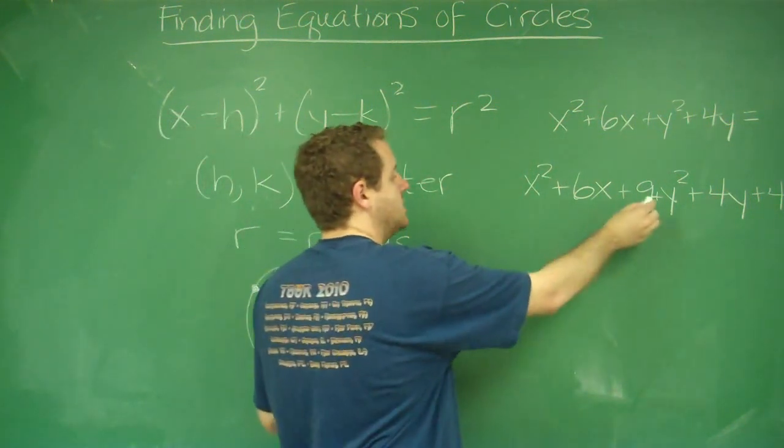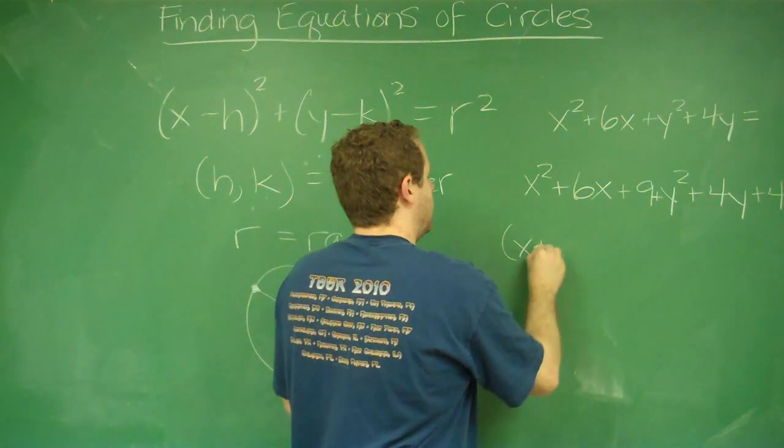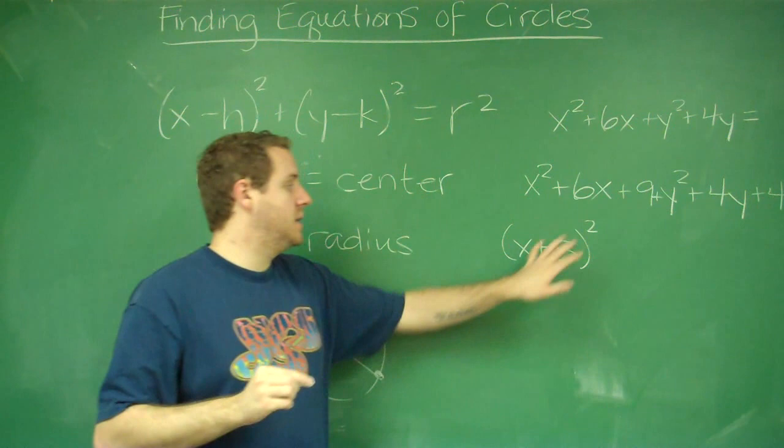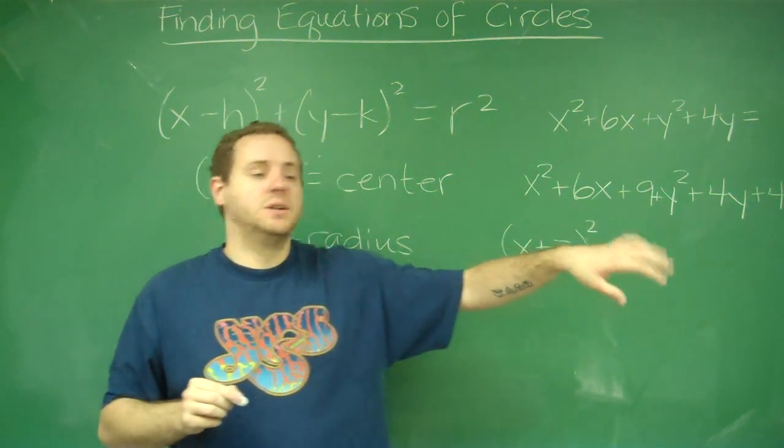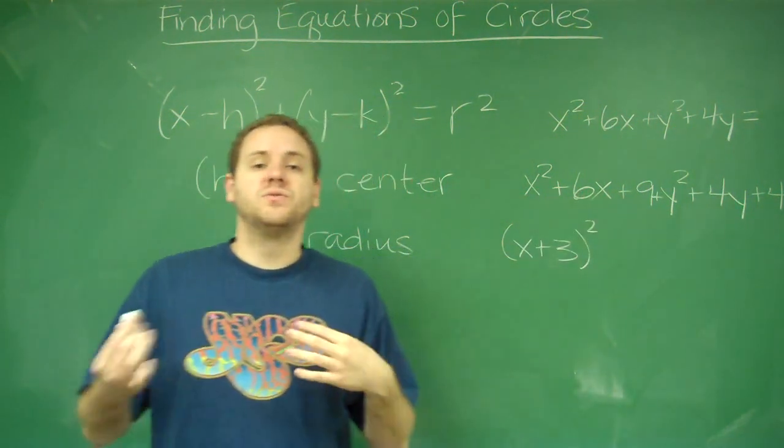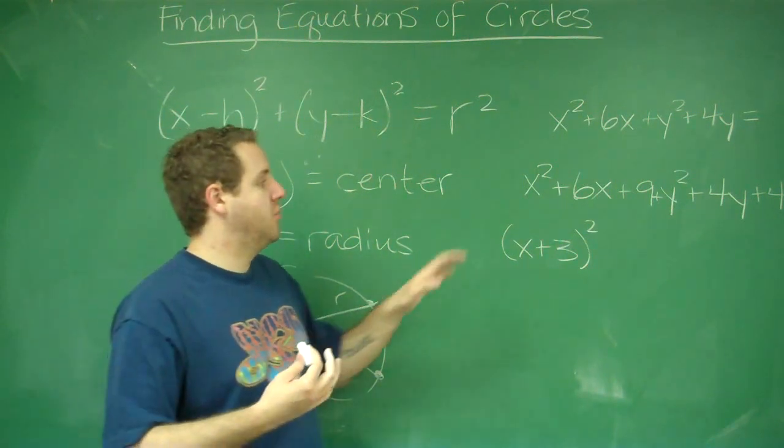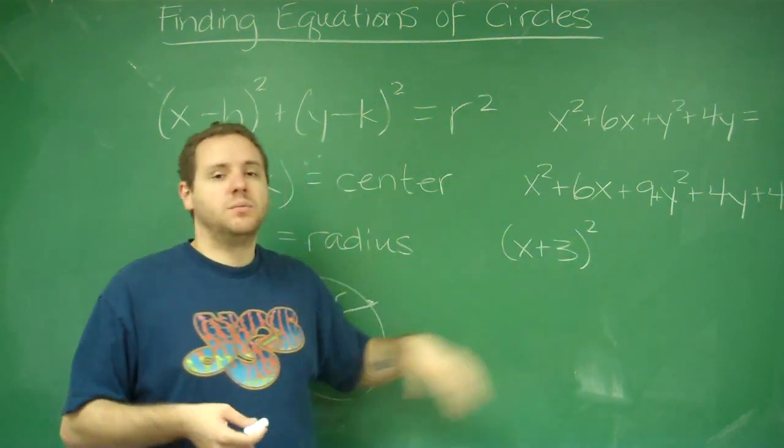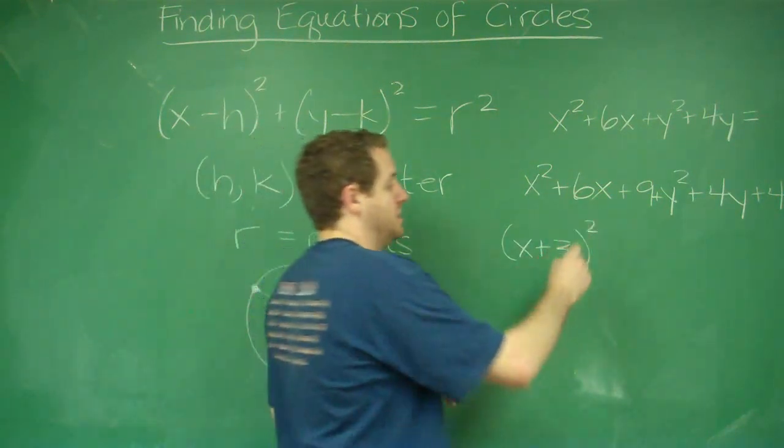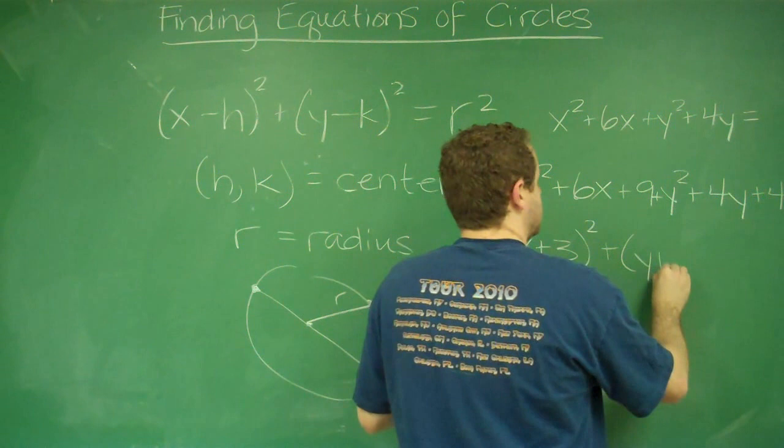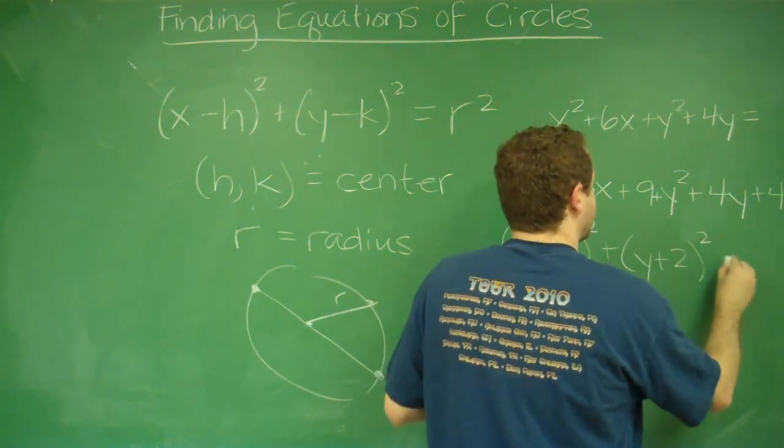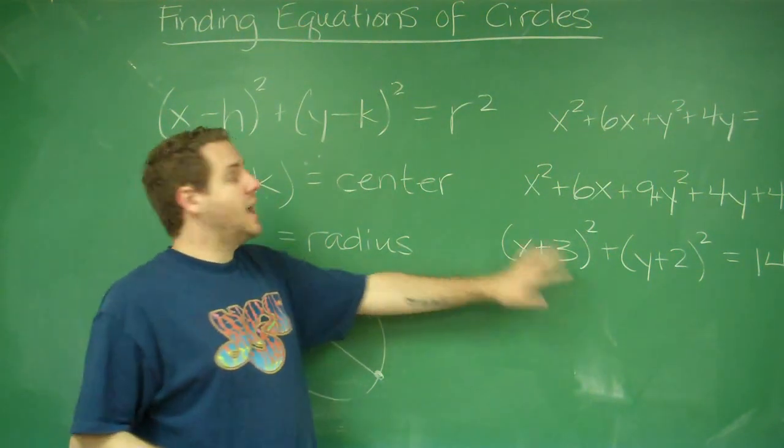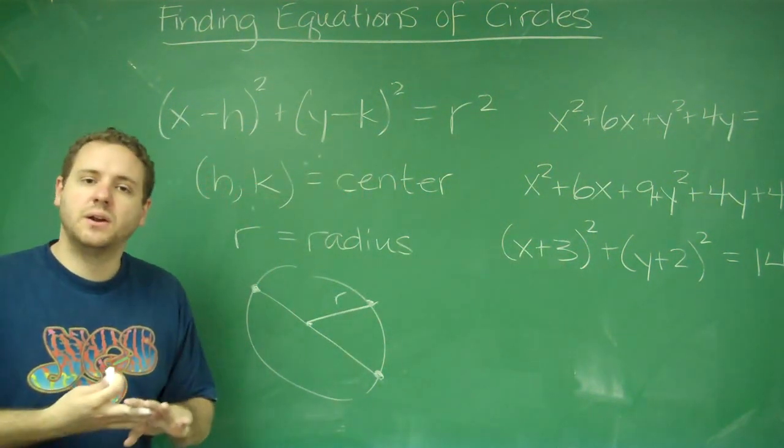Now, we can factor this. x squared plus 6x plus 9 is x plus 3 squared. By the way, whenever you complete the square, you're always going to get a perfect square factorization. So, don't bother trying to figure out reverse FOIL and all that kind of stuff. Whenever you complete the square, that half number that was here is always going to be what's in that factor. So, this is going to be y plus 2 squared equals 14. Now, this looks exactly like our equation of a circle, so we can figure out all this information.